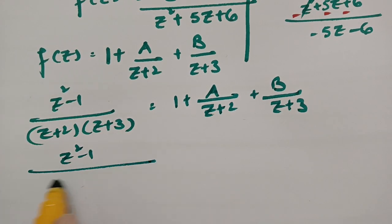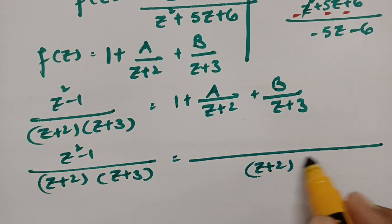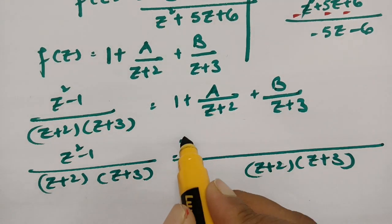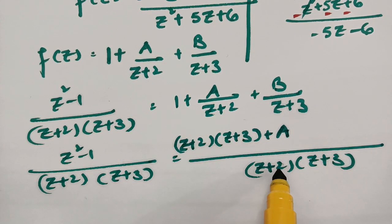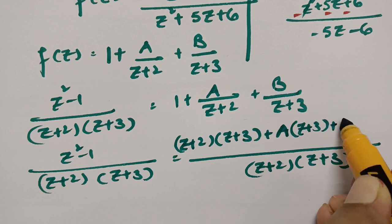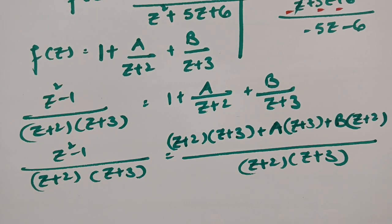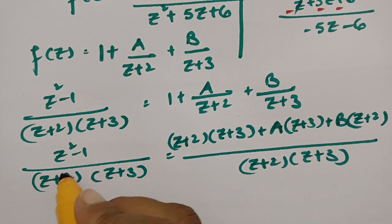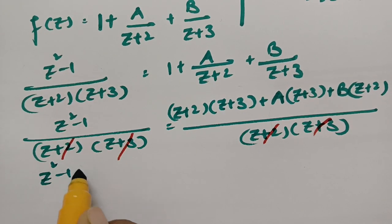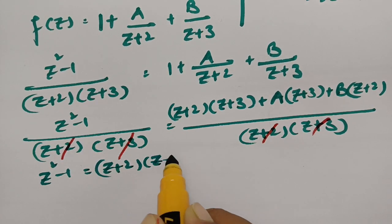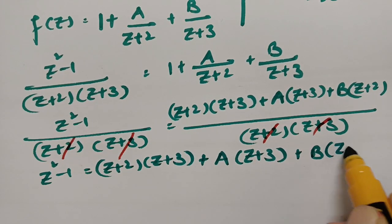Now, (z²-1)/((z+2)(z+3)) equals 1 + A/(z+2) + B/(z+3). Taking LCM as (z+2)(z+3) and cancelling the denominator, we get z²-1 = (z+2)(z+3) + A(z+3) + B(z+2).